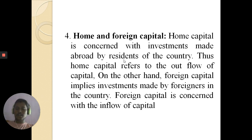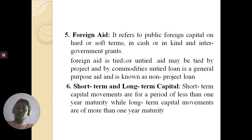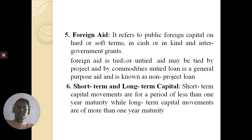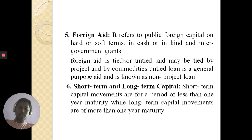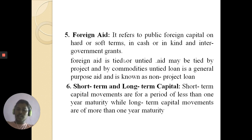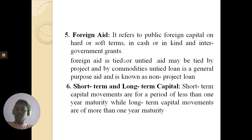Foreign capital refers to investments made by foreigners in the country and is concerned with the inflow of capital. The fifth type is foreign aid, which refers to public foreign capital on hard or soft terms, in cash or in kind, including intergovernment grants. Foreign aid may be tied by project or by commodities, or untied — an untied loan is a general purpose aid, also known as a non-project loan. The sixth type is short-term and long-term capital: short-term is for less than one year maturity, long-term is for more than one year.